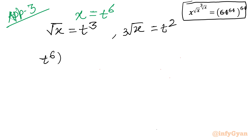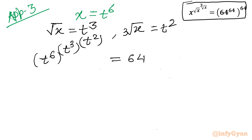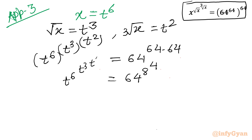Writing the left-hand side: t power 6, with square root x as t cubed in the power, and cube root x as t squared in the power. The right-hand side: using the exponent law, 64 times 64 can be written as 64 times 8 squared times 8 squared, giving 8 power 4. So we have t power 6, t power 3, t power 2 on the left.